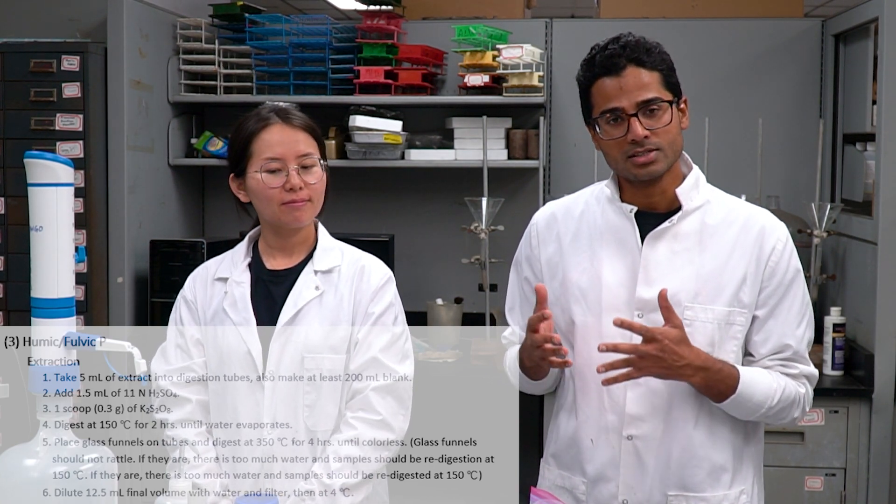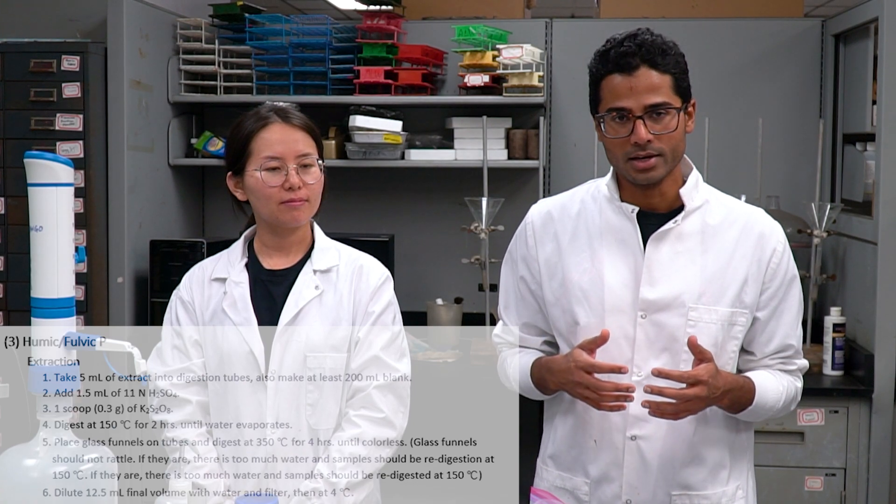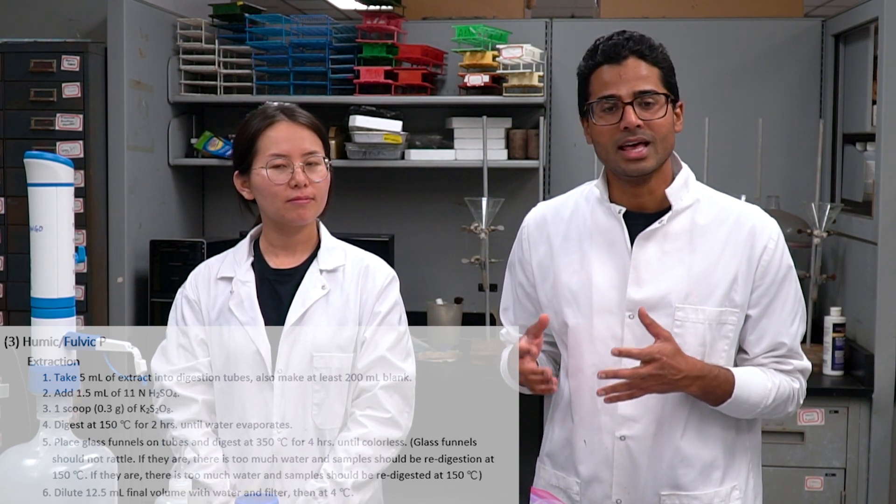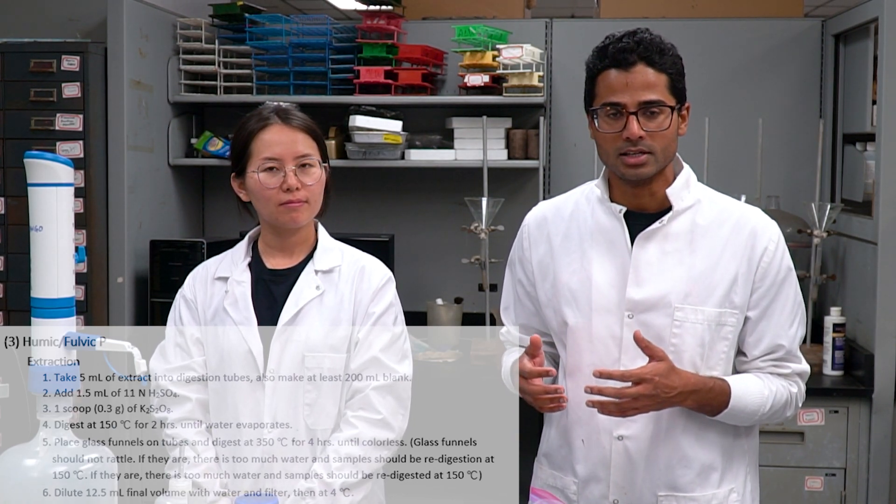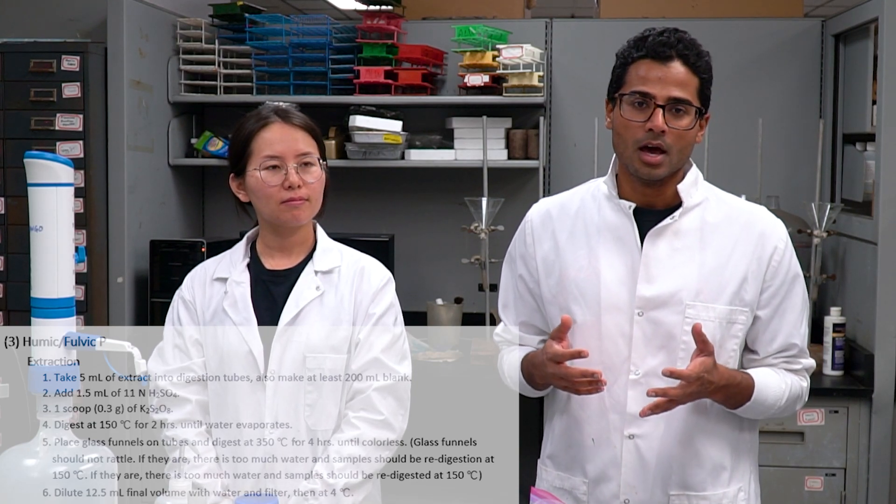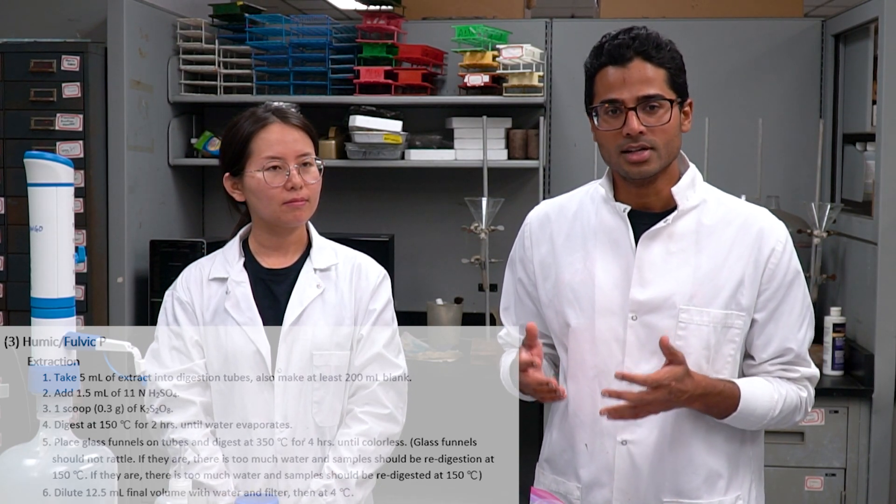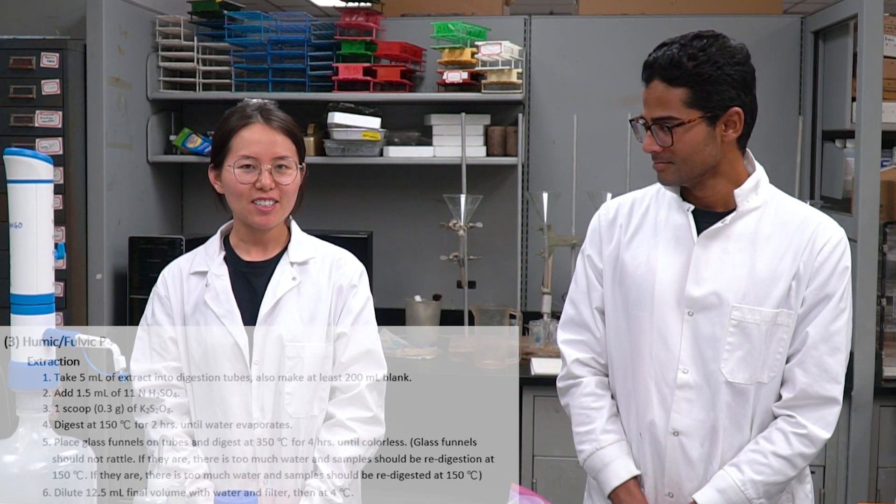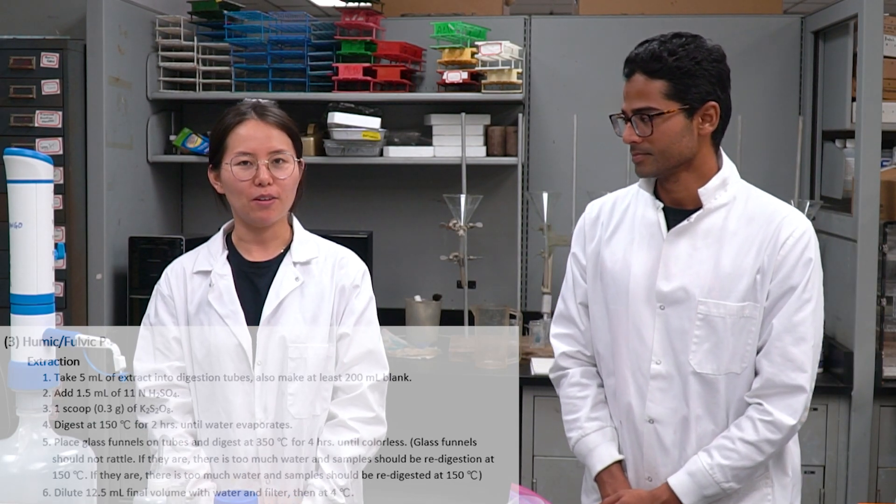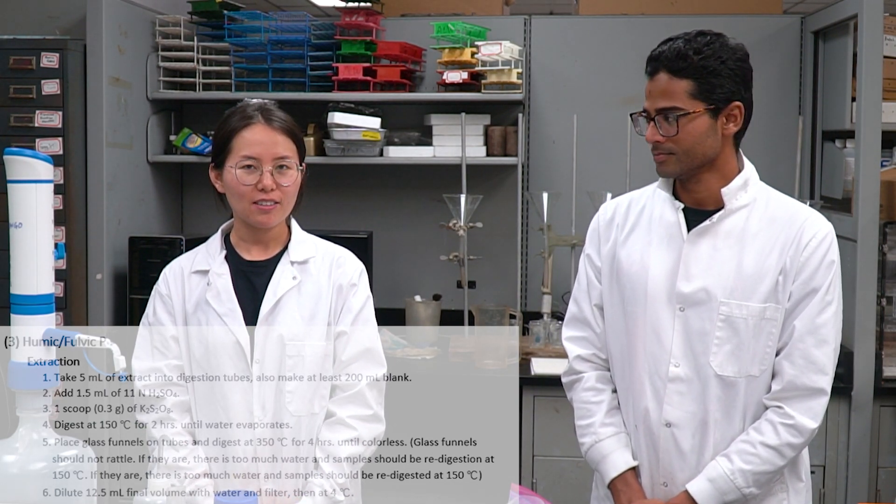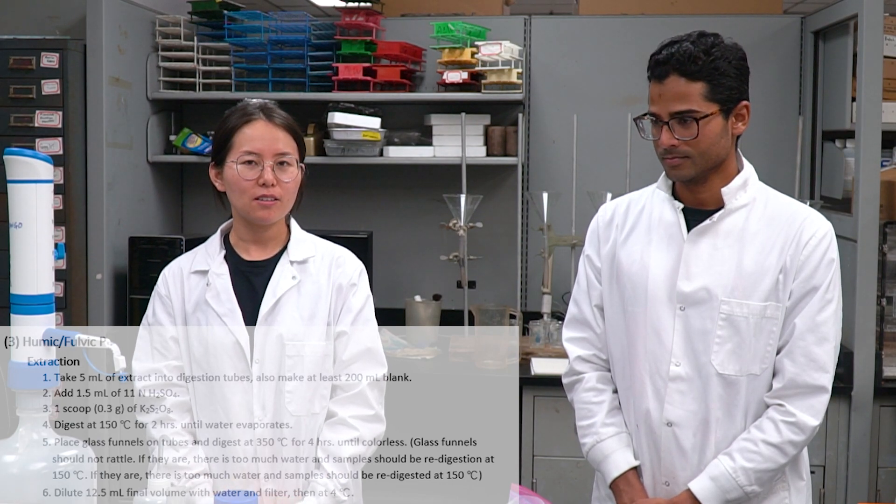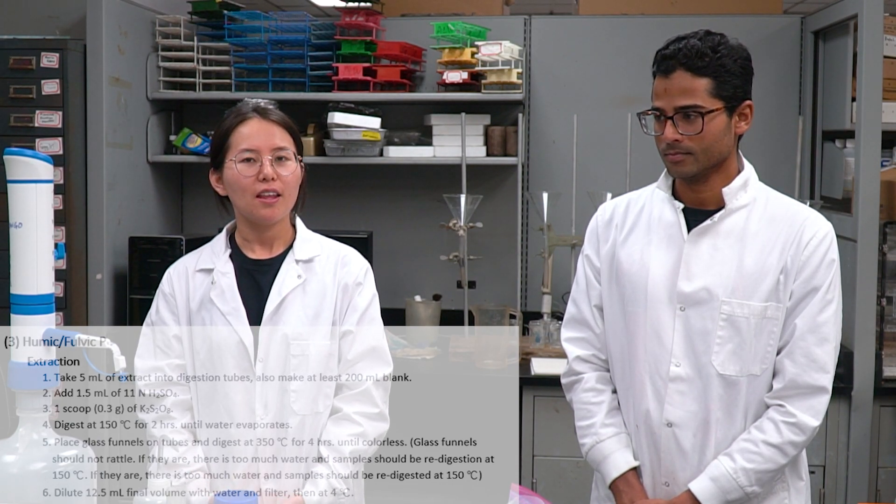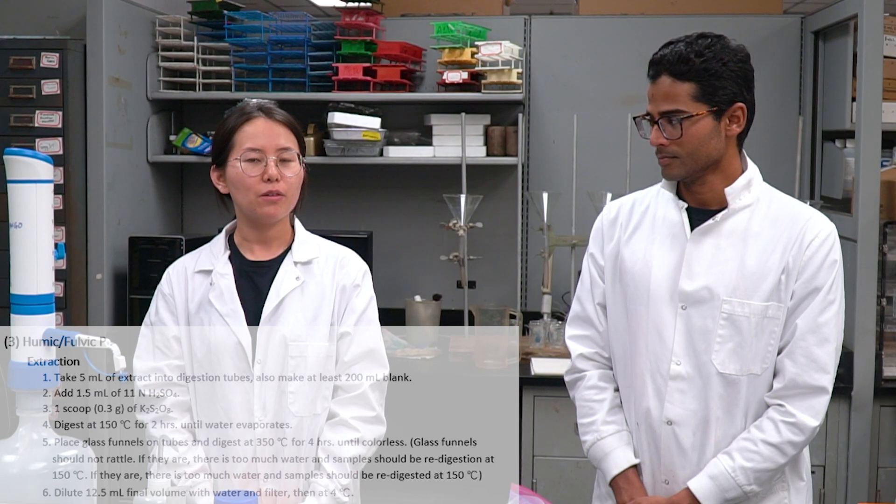After second extraction, the humic and fulvic P is extracted using the same solution of sodium hydroxide by acidifying with 11 normal sulfuric acid followed by digestion at 150 degrees Celsius. In this section, we're going to use two chemicals. One is sulfuric acid, another one is potassium persulfate, and the solutions will be measured with ICP.